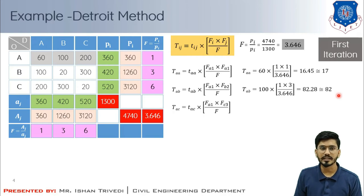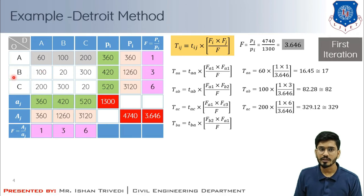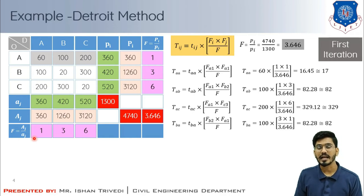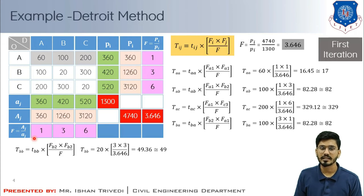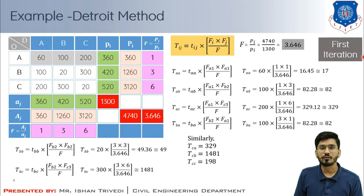For TBA: 100 times 3 times 1 divided by 3.646. For TBB: similarly computed to get a nearest value of 49. For TBC, TCA, TCB, and TCC, calculations follow the same approach. After computing all values, I plot the matrix for the first iteration. In the updated matrix, 60 is replaced by 17, 100 by 82, 200 by 329, and TBA is replaced by 82, reforming the entire first-iteration matrix.